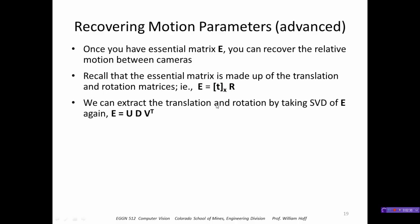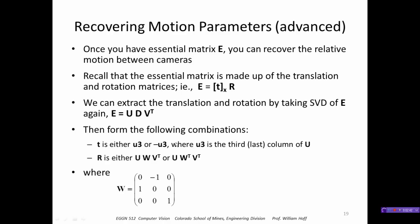We can extract the translation and rotation by again taking the SVD of E. Here D should be that diagonal matrix of 1, 1, and 0 along the diagonal. So then we form the following combination: the translation is the third column of U, but it's either that column or it's negative. R we form from this matrix W and the matrix V from the decomposition, but there are also two combinations of that.